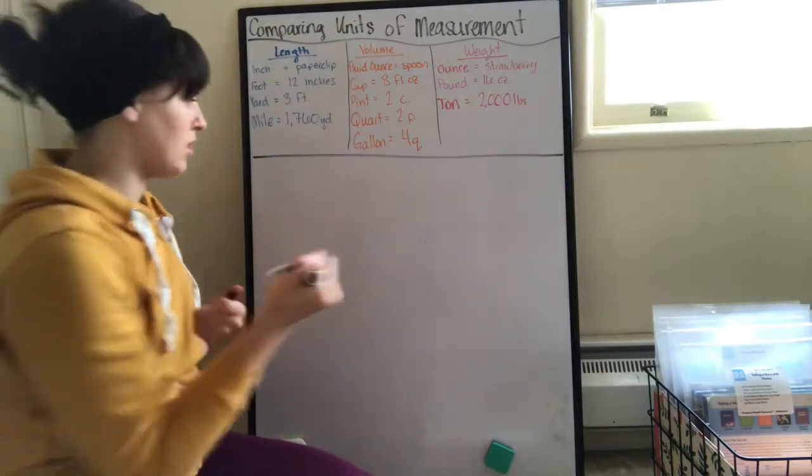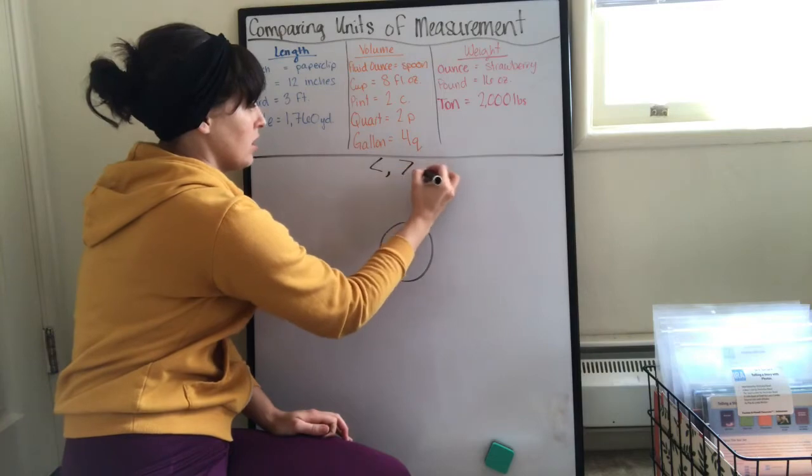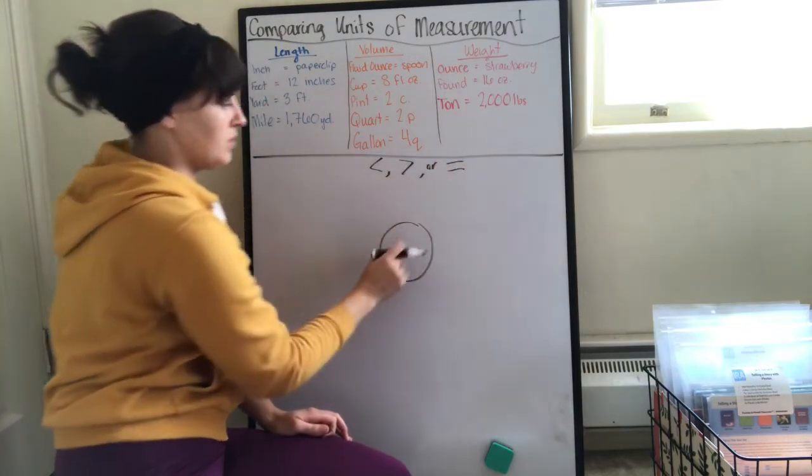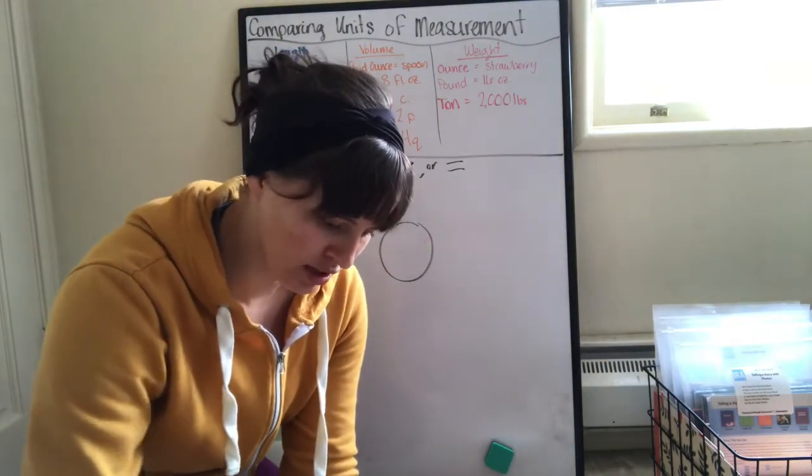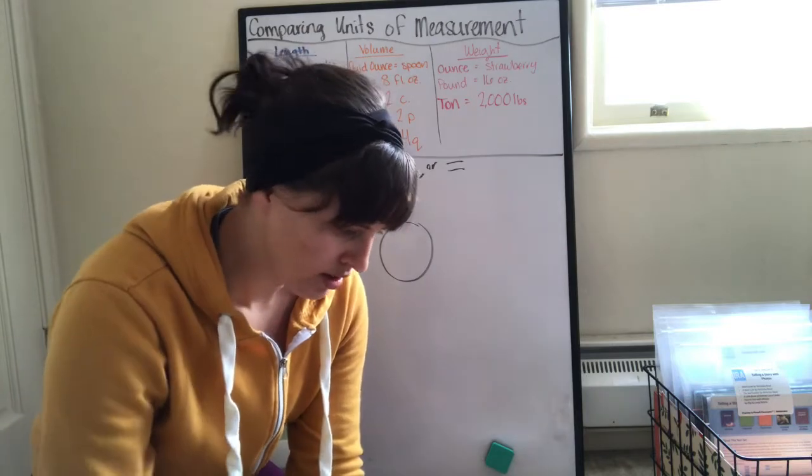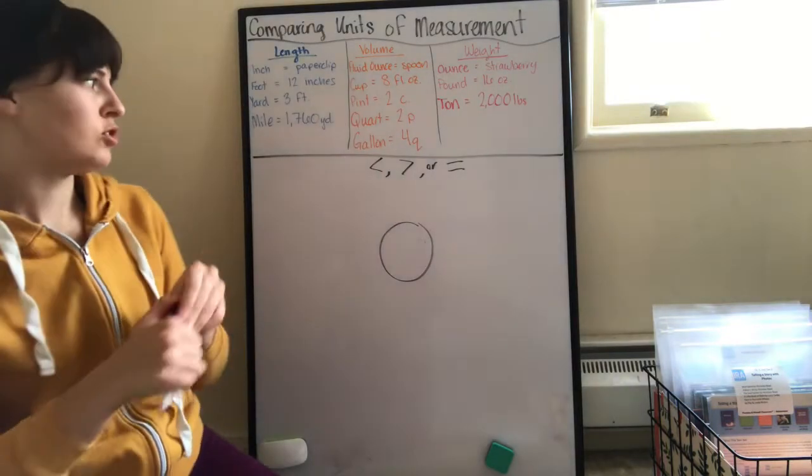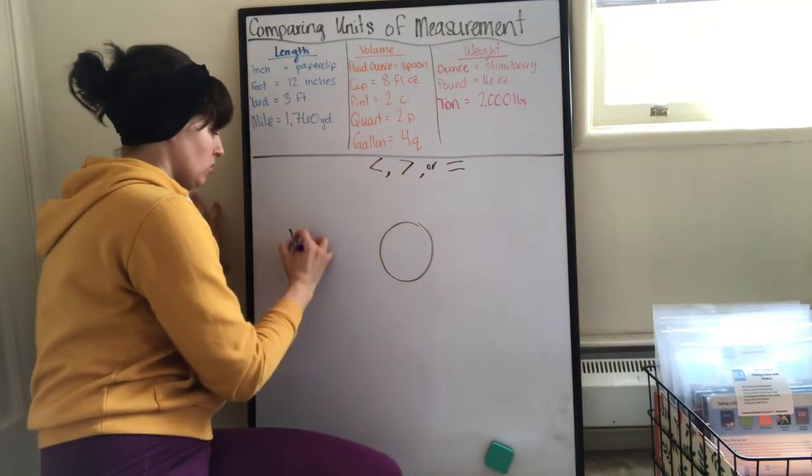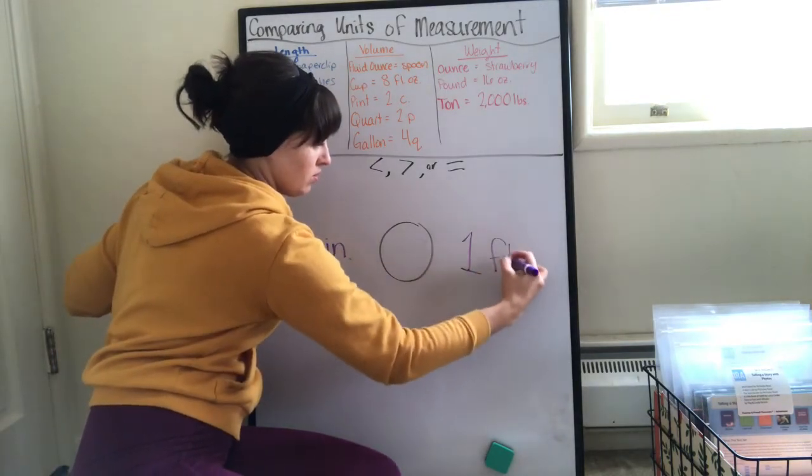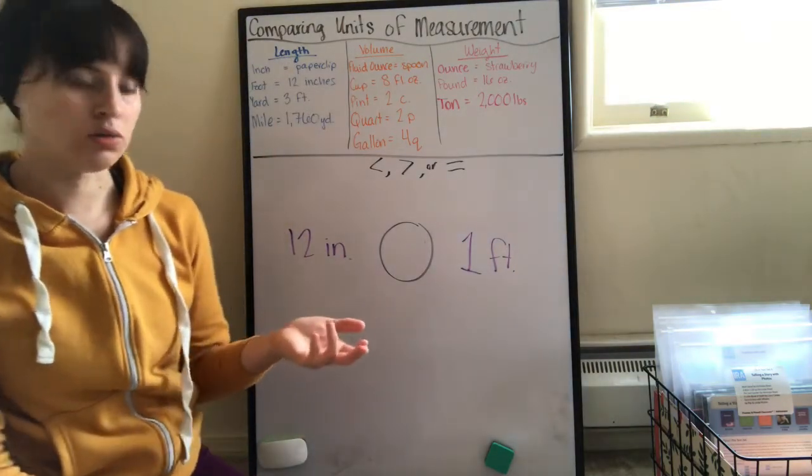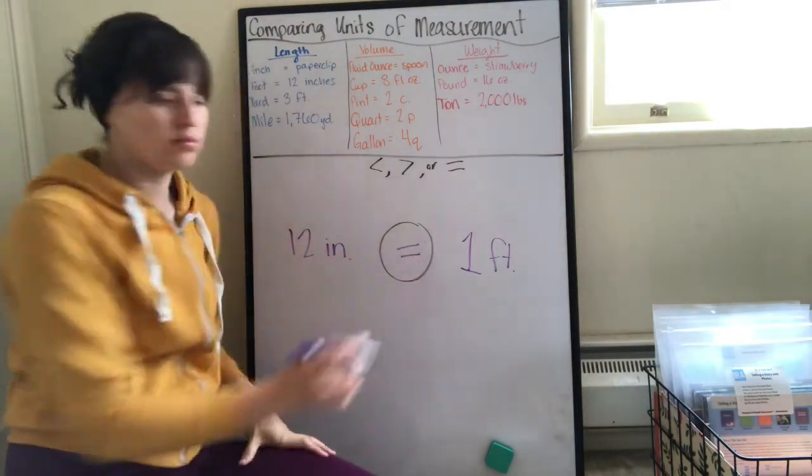And we're going to do some comparing, so we're going to use less than, greater than, or equal to. For example, let's say I have twelve inches and one foot. Greater than, less than, or equal to? One foot equals twelve inches. They're the same thing.